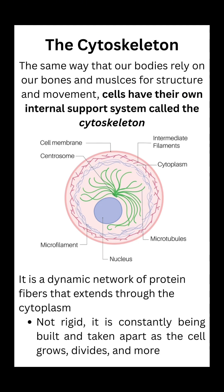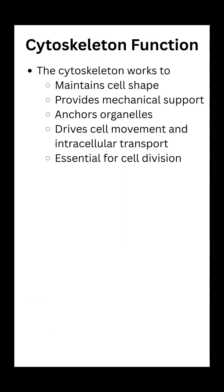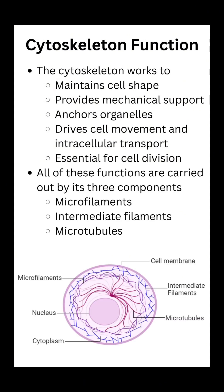So what exactly does the cytoskeleton do? Well, it's going to maintain cell shape, provide mechanical support, anchor organelles, allow for intracellular transport, and power cell motility and cell division. These functions are going to be carried out by three components: microfilaments, intermediate filaments, and microtubules.